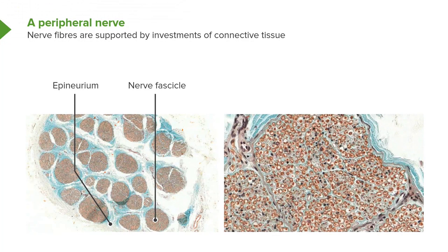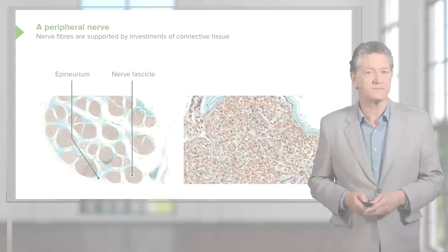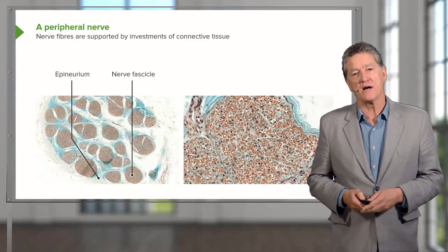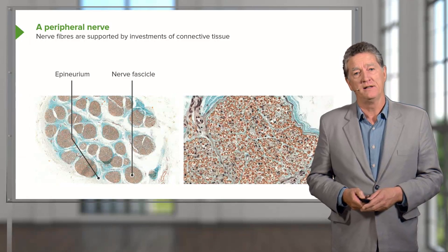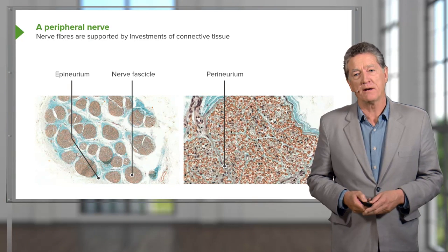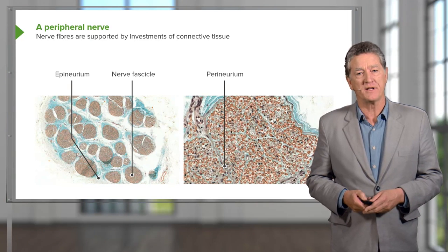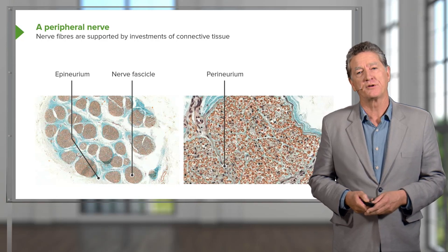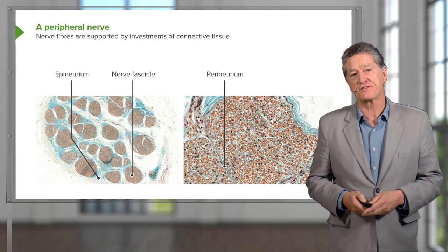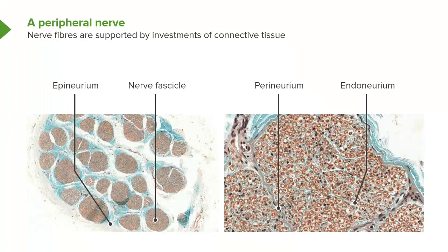There are a number of nerve fascicles making up this peripheral nerve. Each of those nerve fascicles is surrounded partly by the epineurium, but also by the perineurium. The perineurium divides these bundles into smaller components, but also wraps up the outside of the bundle. And let me remind you that individual axons are wrapped up by the endoneurium.